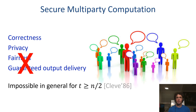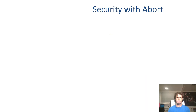Unfortunately, it is well known that unless an honest majority can be assumed, fairness and guaranteed output delivery cannot be achieved in general. So the standard security requirement in the dishonest majority setting is reduced to security with abort. In security with abort, we would like correctness and privacy to hold, but we allow the adversary to abort the computation even after obtaining the output of the corrupted parties.